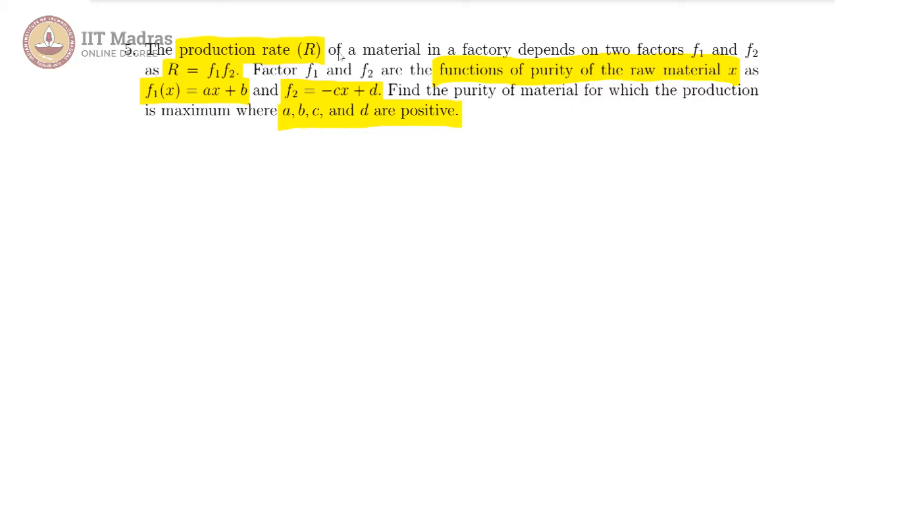So, let us understand what is being done here. We have two linear functions and the rate of production r is f1 times f2, which will then be ax plus b into minus cx plus d.